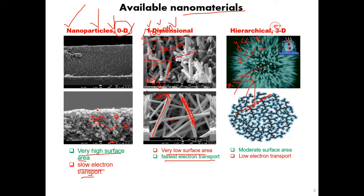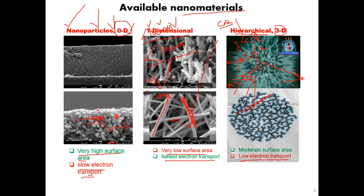The third type is hierarchical, or what we call three dimensions. If everything is extending in the same way along x, y, and z, we call it three dimensional — like a cauliflower shape. If you have a cauliflower shape, we call it three-dimensional hierarchical. It has low electron transport because there is no straight path, but it has a higher surface area compared to one dimension.